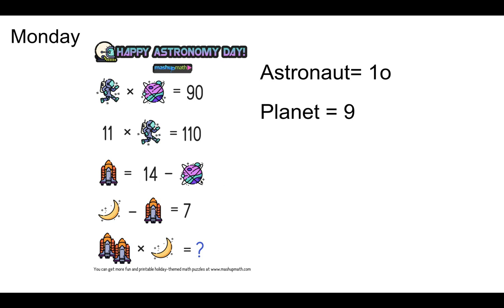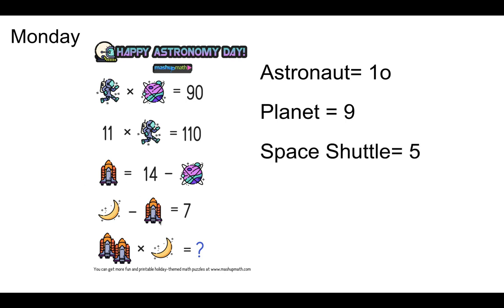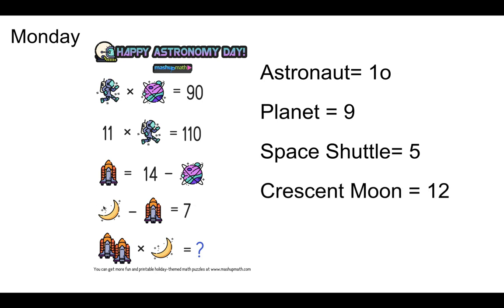If the planet is worth 9, 14 take away 9 is 5. The space shuttle is worth 5. If the space shuttle is worth 5, what number minus 5 is 7? It's not 2 — that would be 2 plus 5 is 7. It's 12. 12 take away 5 is 7.